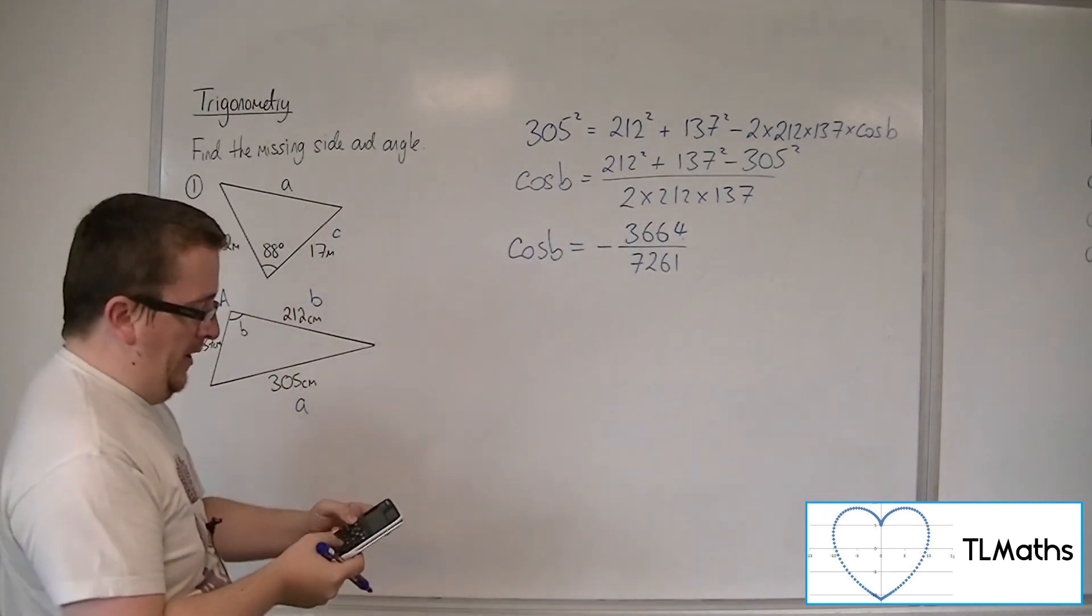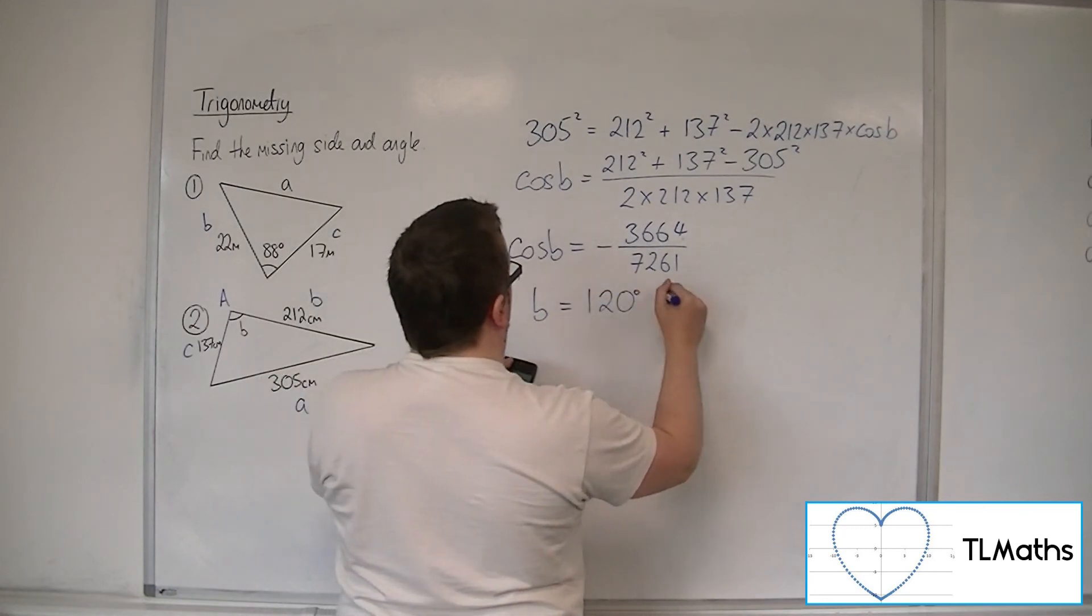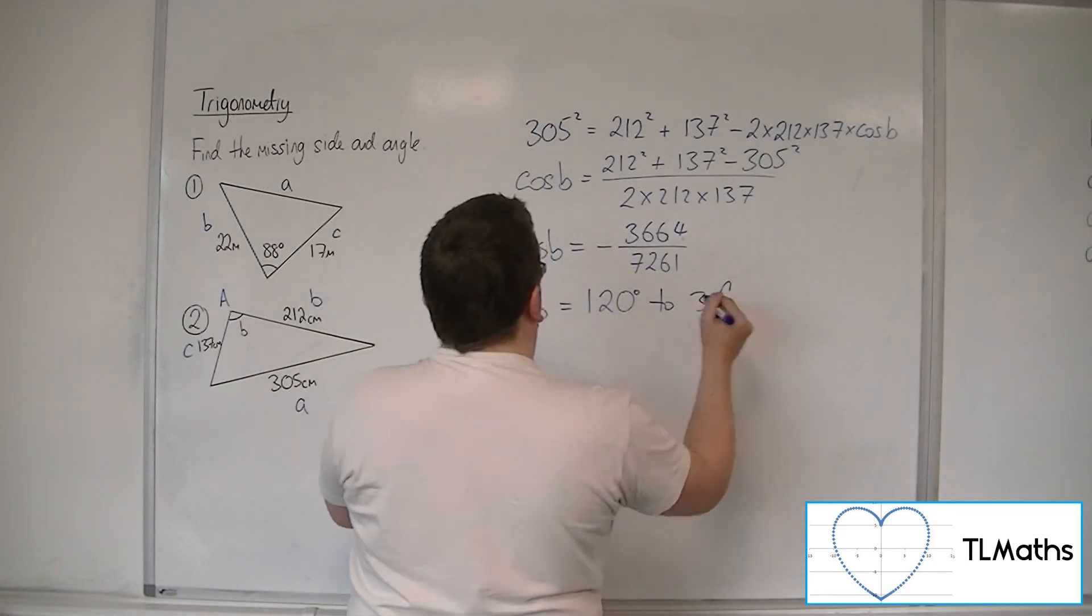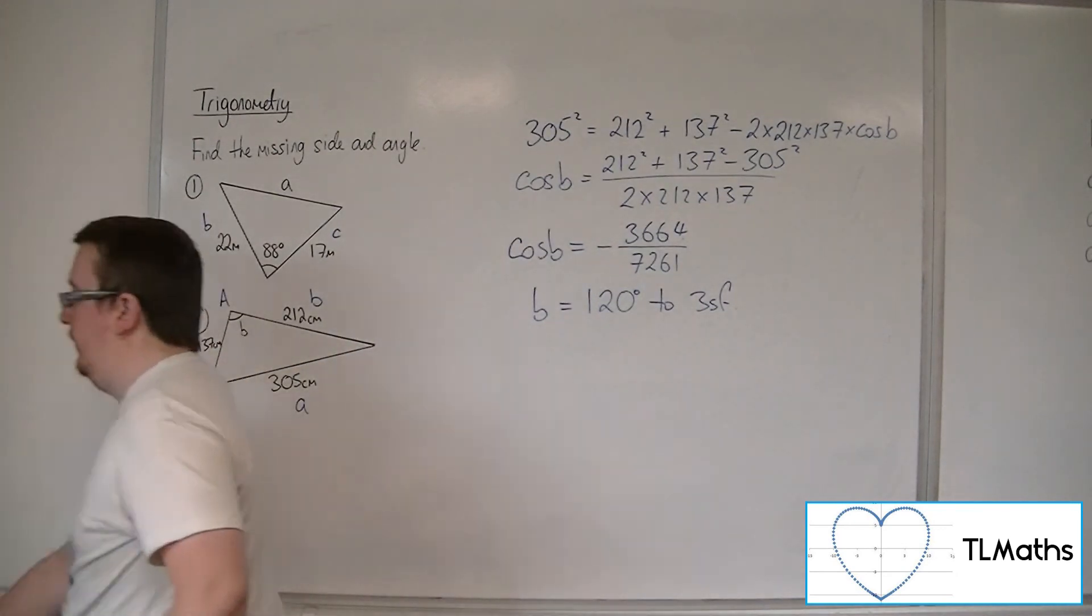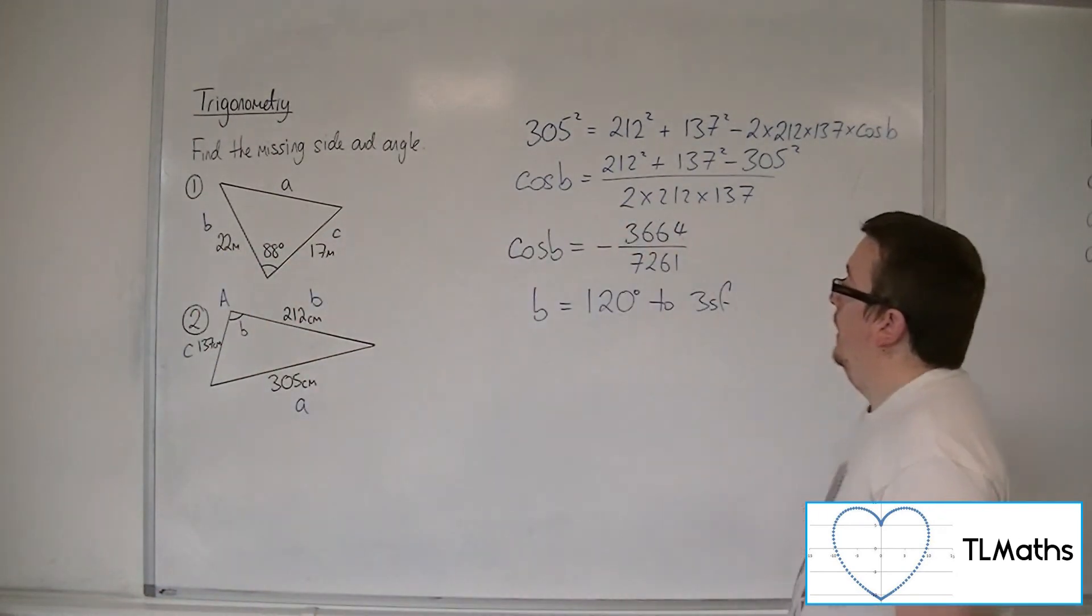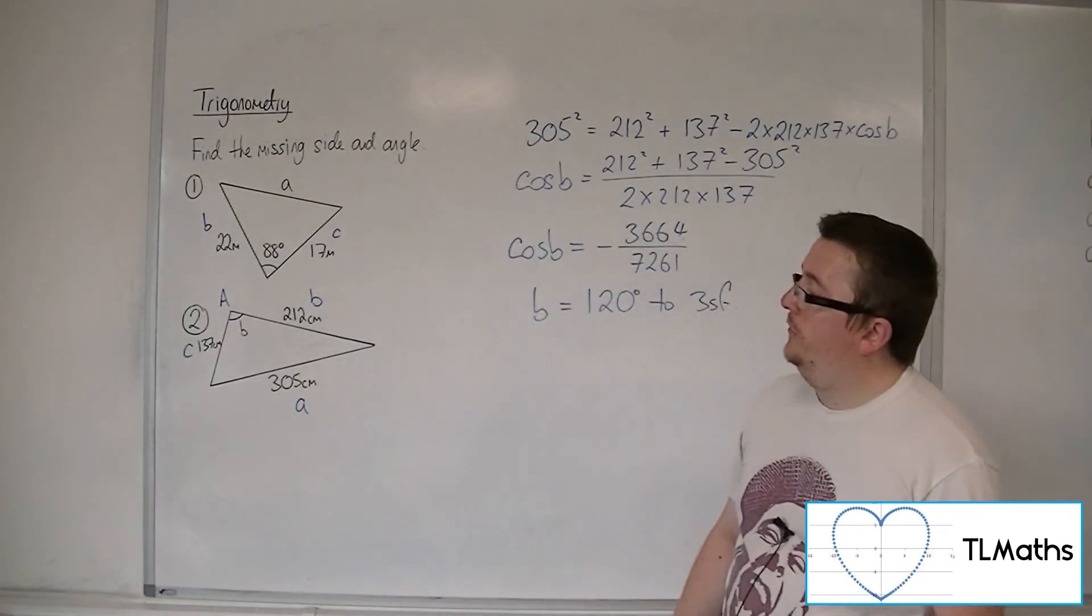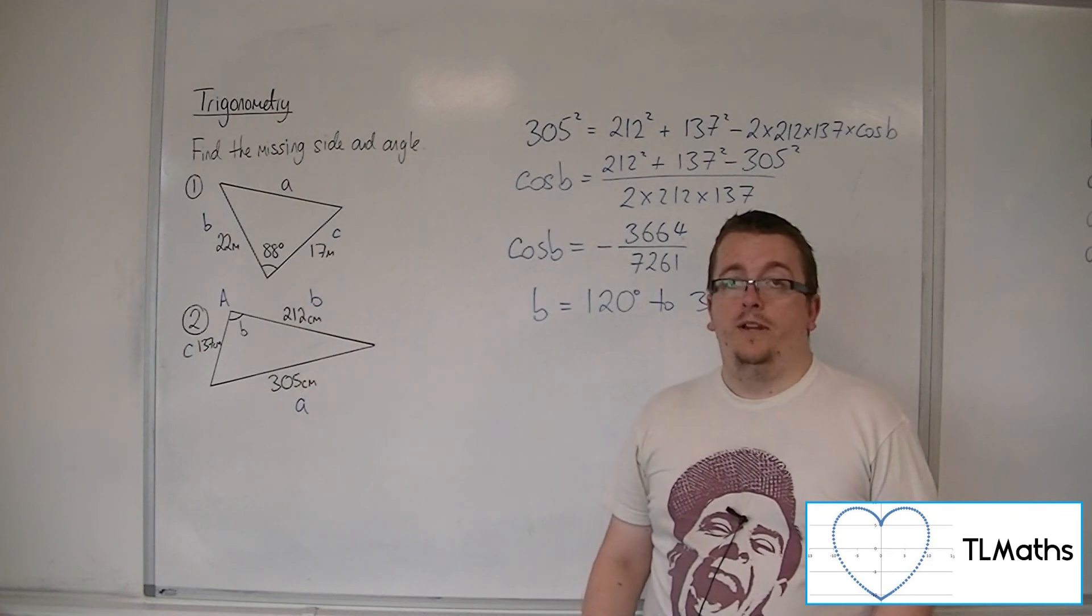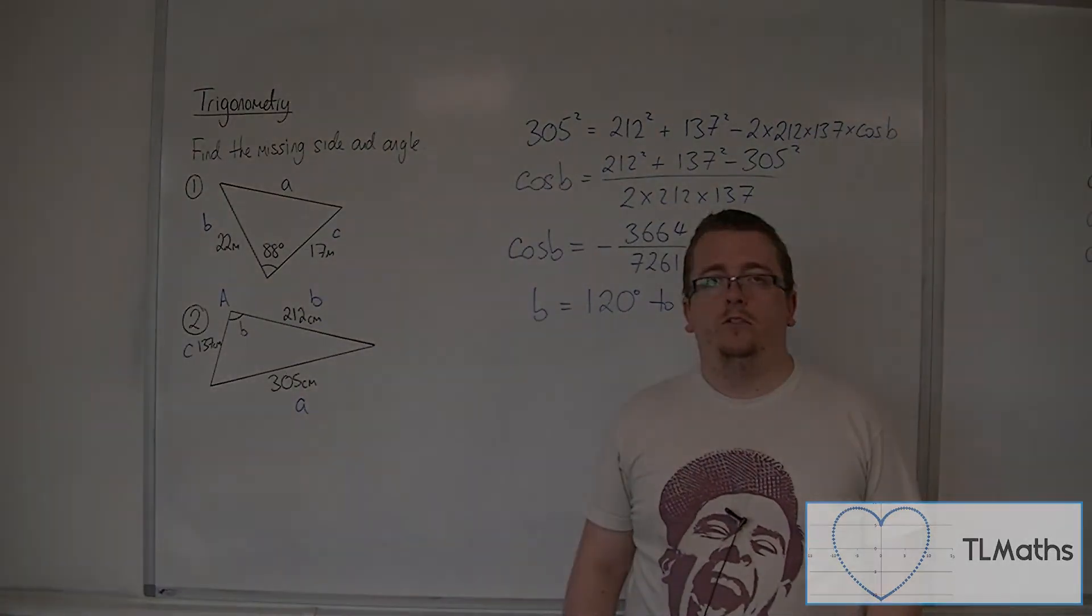Gets cosine B of minus 3664 over 7261. So inverse cosine answer key gets B of 120 degrees to three significant figures, 120.3057116 on the calculator. 120 degrees makes sense given the situation that I have. So that's how you can use the cosine rule to find a missing side or a missing angle.